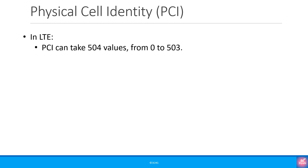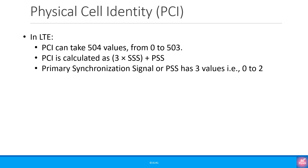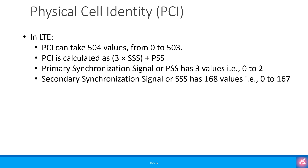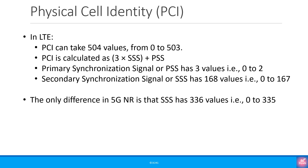In LTE, PCI can take 504 values, i.e. from 0 to 503. PCI is calculated as 3 times SSS plus PSS. The primary synchronization signal or PSS has 3 values: 0, 1, and 2. The secondary synchronization signal or SSS has 168 values, i.e. from 0 to 167. The only difference in 5G NR is that the SSS has 336 values, i.e. from 0 to 335, so 5G NR supports 1008 unique PCIs.